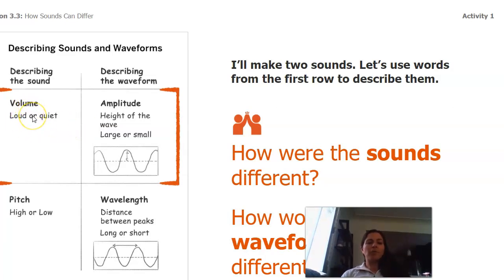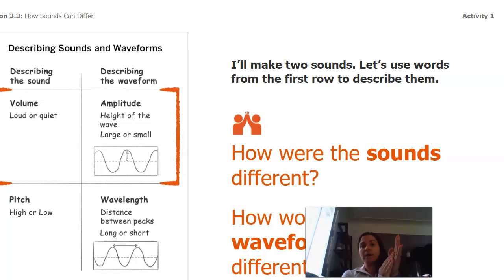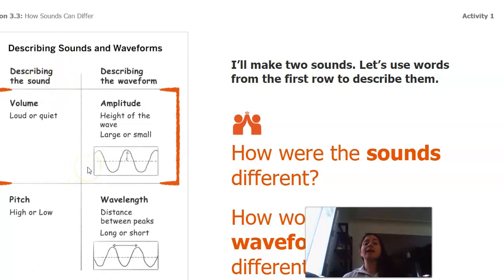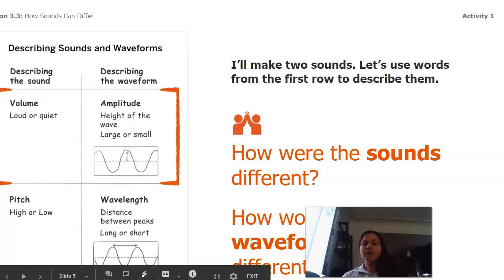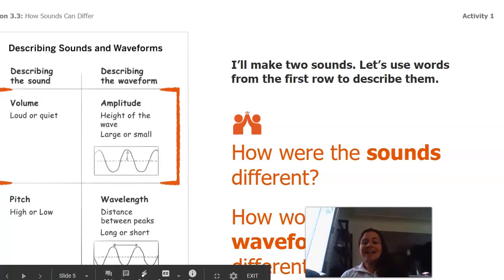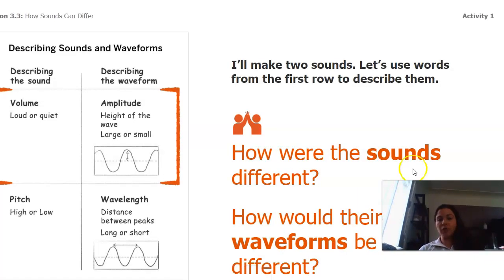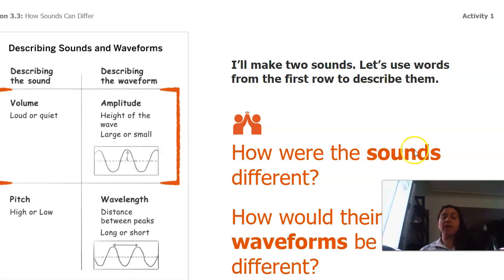The first one: volume — loud or quiet. I can do a loud clap or I can do a quiet clap. Those two different claps have different waves happening. When I do a loud clap, the height of that waveform is a lot higher than when I do a quiet clap. The waveform would be taller if the volume was greater, or shorter if the volume was lower.